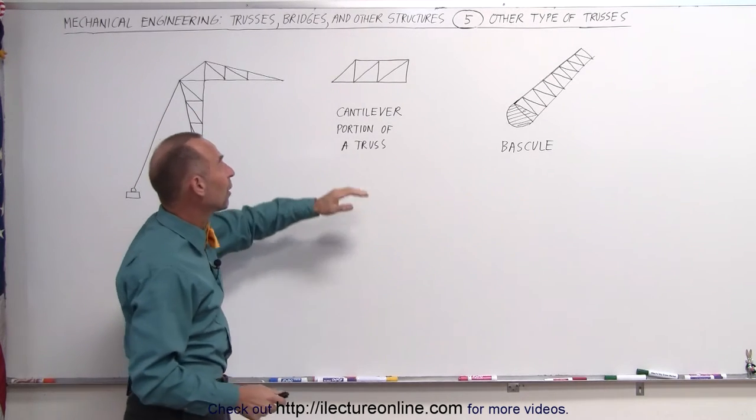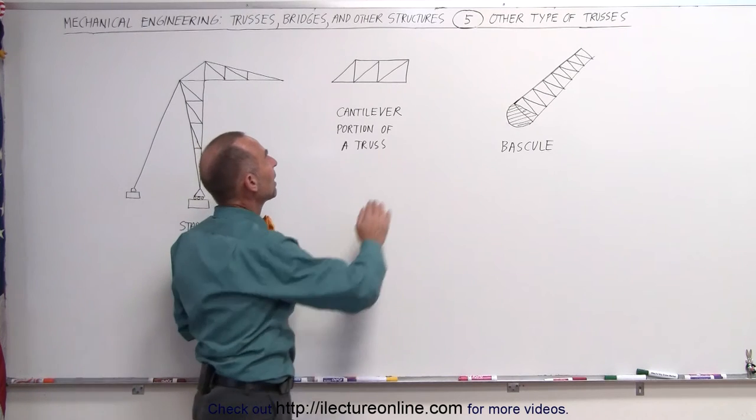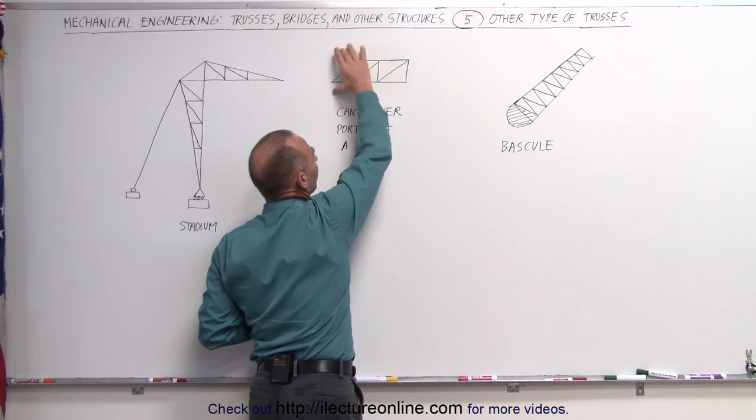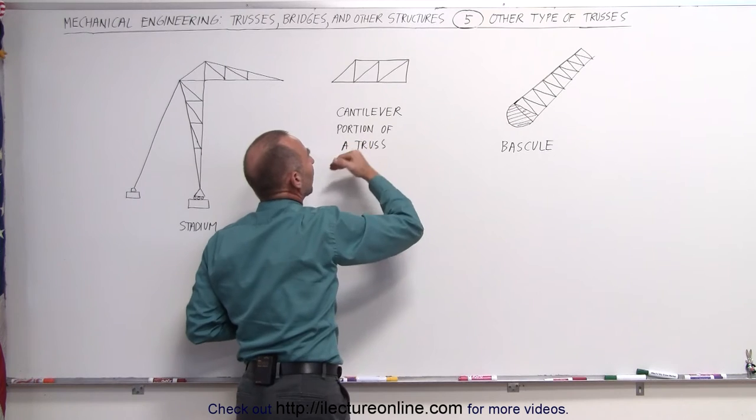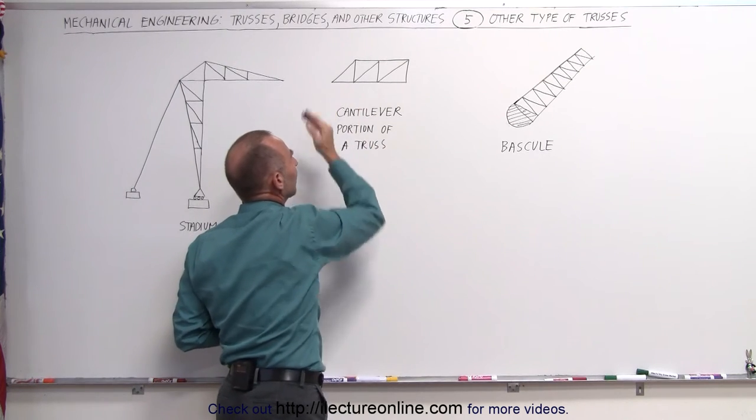Another way of doing that is what we call the cantilever. Again, we would have a connection on this side supporting this large structure that supports a lot of open space and not connected on the far end.